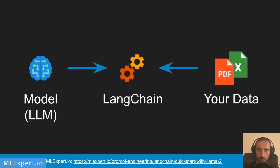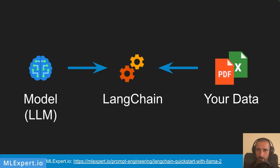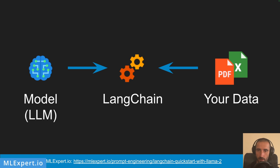Why should you use LangChain? The most important use case is to combine your large language models such as ChatGPT or Llama 2.0 with some external source of data. Common examples include PDFs, CSV files, external databases, or external tools such as Google web searches, API requests, and other tools such as calculators and even code interpreters.